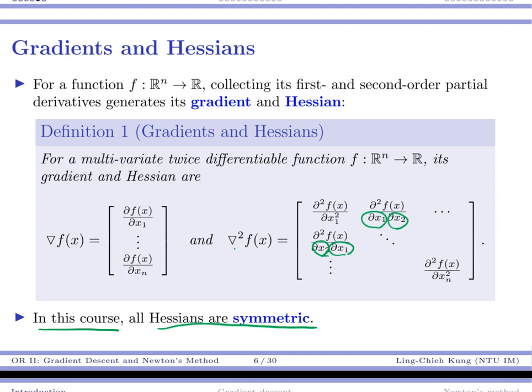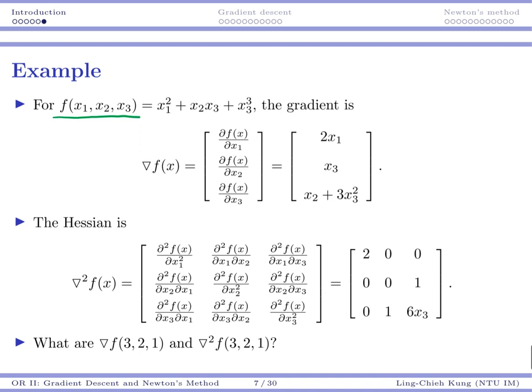So let's take a look at the numeric example. Suppose your f have three input variables and the functional form looks like x1 squared plus x2 x3, plus x3 cubed. Then to do the gradient, we take first order derivatives.